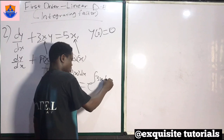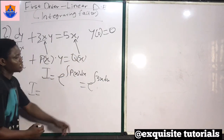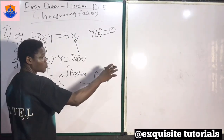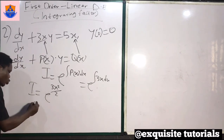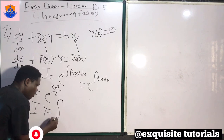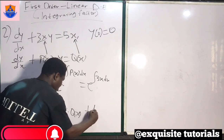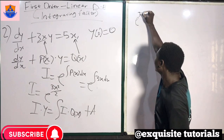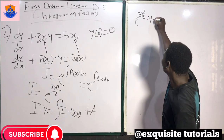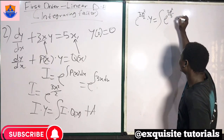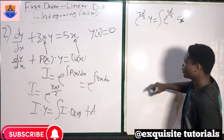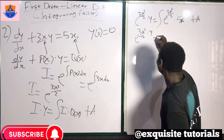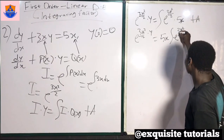So we have the integral of 3x dx. When I integrate 3x, I get 3x squared over 2. Don't forget about the constant when computing the integrating factor. So our integrating factor is e^(3x²/2). The solution is: integrating factor times y equals the integral of the integrating factor times q of x, plus our constant. Substituting: e^(3x²/2) times y equals the integral of e^(3x²/2) times 5x, plus our constant a.